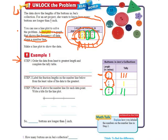So if we look at all of our tally marks that we just made, we can see that Jen has 1, 2, 3, 4, 5, 6 buttons in total. 6 total buttons.